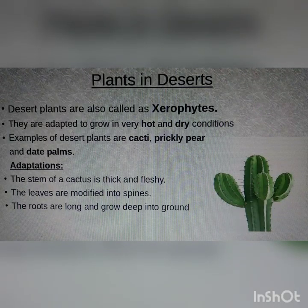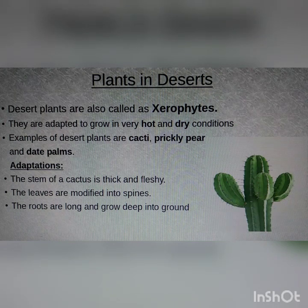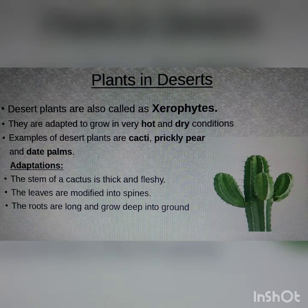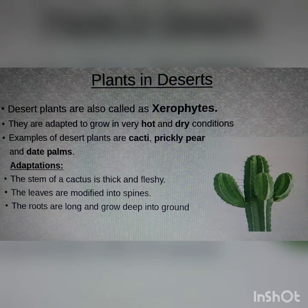First let us see about the plants that grow in deserts. Desert plants are also called as xerophytes. As you all know, desert is a place which is very hot and very dry, so these plants are adapted to grow in those conditions. Examples of desert plants are cactus, prickly pear, and date palms.